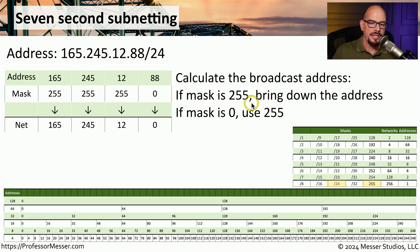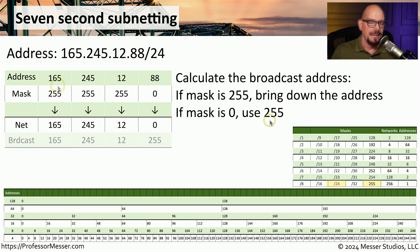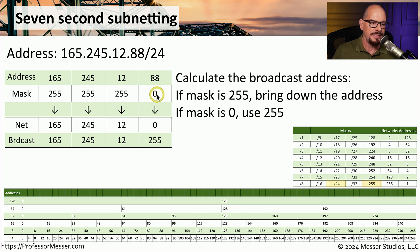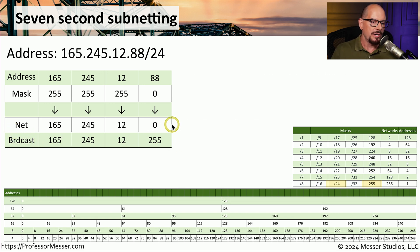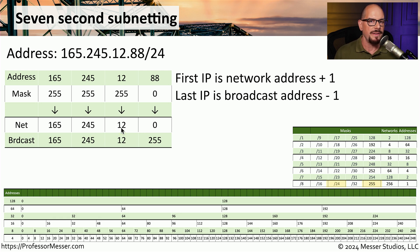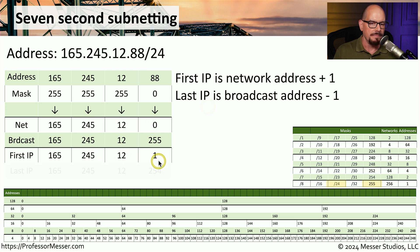To calculate the broadcast address, we look at the subnet mask again. If it's 255, we bring down the address number; if the mask is zero, we use 255. The first, second, and third octets all have 255, so we bring down 165.245.12. The last octet has a mask of zero, so we put 255 there, giving a broadcast address of 165.245.12.255. The first available IP is the network address plus one: 165.245.12.1. The last IP is the broadcast address minus one: 165.245.12.254.